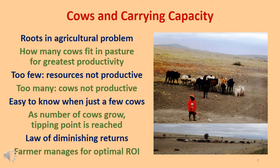The concept of tourism's carrying capacity has its roots in the agricultural problem of how many cows can graze in a pasture. If a farmer puts too few cows in the pasture, then he has excess grass, water, and space going to waste. But if he puts too many cows in the pasture, they won't get all the grass, water, and space they need to grow and produce milk and beef properly. When there are just a few cows in the pasture, it's easy to see there is no stress on the cows or the farmer's resources. But as the number of cows increases, the pasture will eventually reach a tipping point and the law of diminishing returns begins to apply.